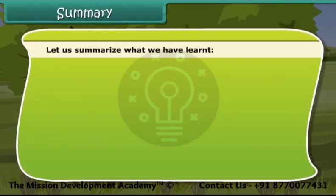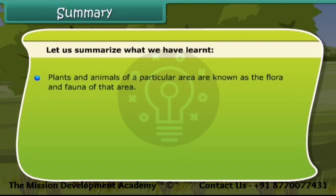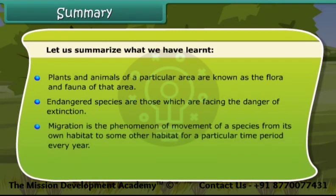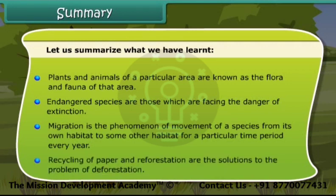Let us summarize what we have learned. Plants and animals of a particular area are known as the flora and fauna of that area. Endangered species are those which are facing the danger of extinction. Migration is the phenomenon of movement of a species from its own habitat to some other habitat for a particular time period every year. Recycling of paper and reforestation are the solutions to the problem of deforestation.